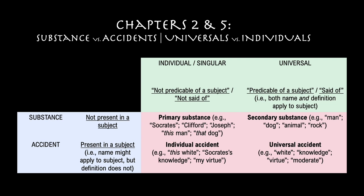In chapter two of The Categories, Aristotle gives four simple ways in which one name can be related to another name. He gives confusing expressions to designate each of these four ways. The first is if a name is predicable of a subject, also called being said of a subject. The second is if a name is not predicable of a subject. The third is if a name is present in another as in a subject. The fourth is if a name is not present in another as in a subject.